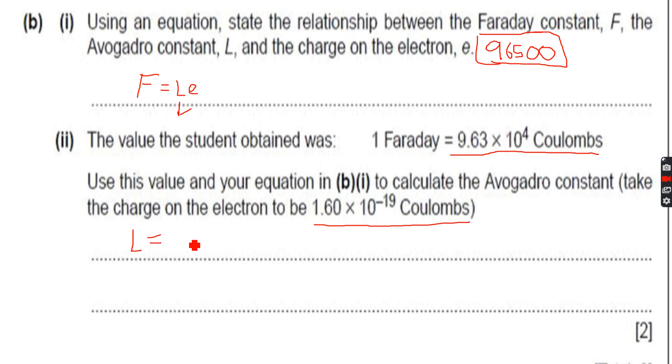which will become L equals F over e, which will become 9.63 times 10 to the power of 4 divided by 1.6 times 10 to the power of minus 19. So e is the electronic charge, F is the Faraday constant, so L equals F over e. Let me do this on my calculator.